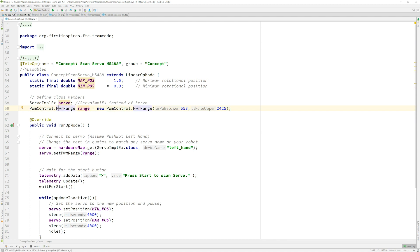We're giving it the name range, and then we're passing in the minimum and maximum PWM signal. So we're going from 553 to 2425 for this particular servo.